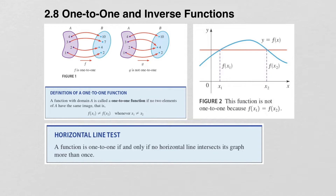In other words, if f of x1 is not the same as f of x2, so if two y values are different, then the x values where they come from must also be different.